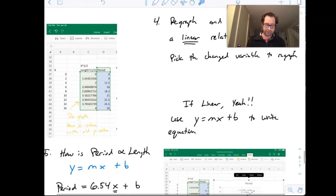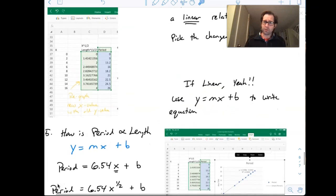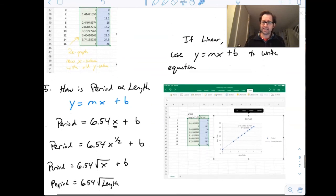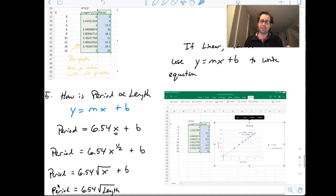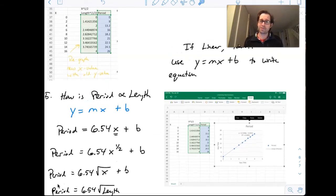I'm going to then re-graph that new x value, so the new length to the square root, with the old y value. Now, I'm going to re-look at my line. Is it linear? And if so, I have found the y equals mx plus b relationship I'm looking for. And in this case, it sure is. It's very linear. So then I'm going to use this equation.